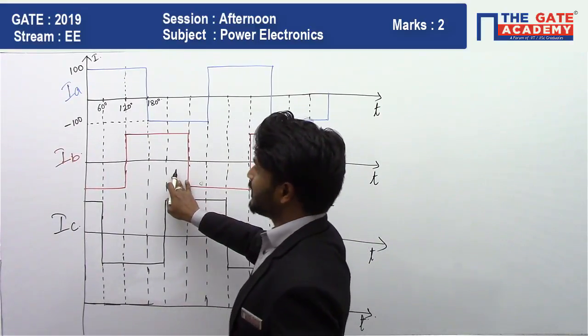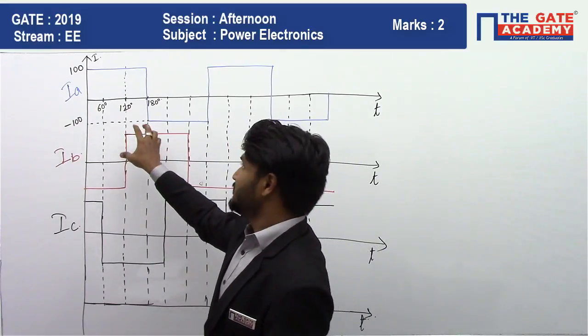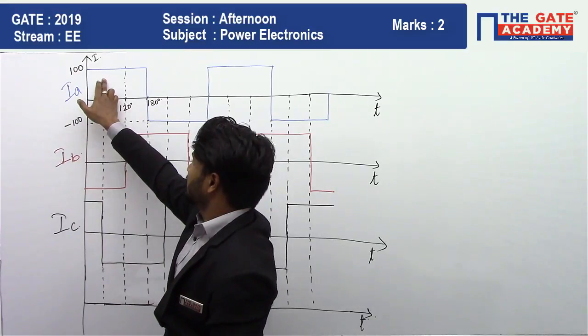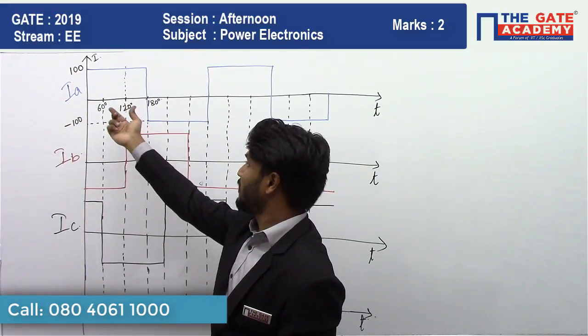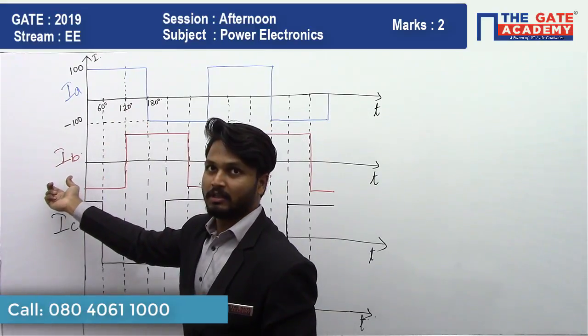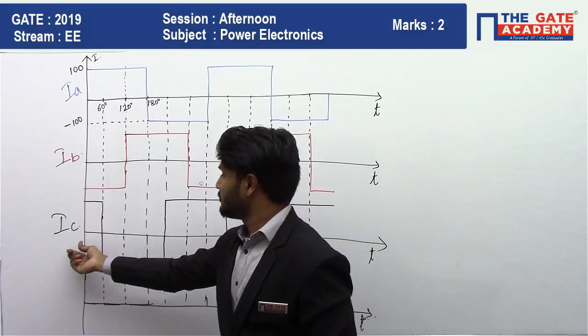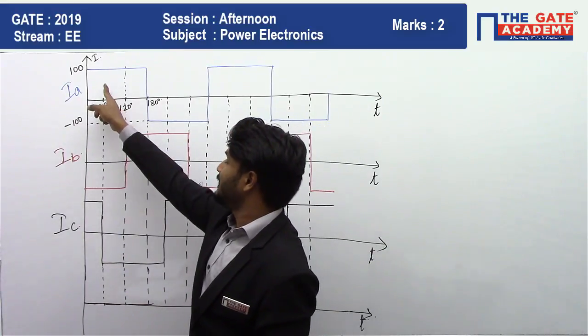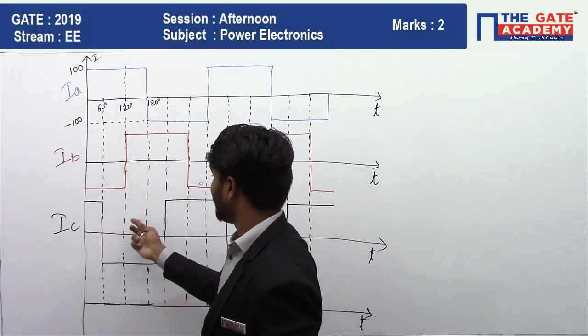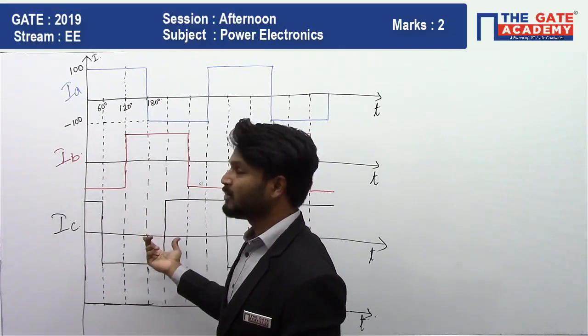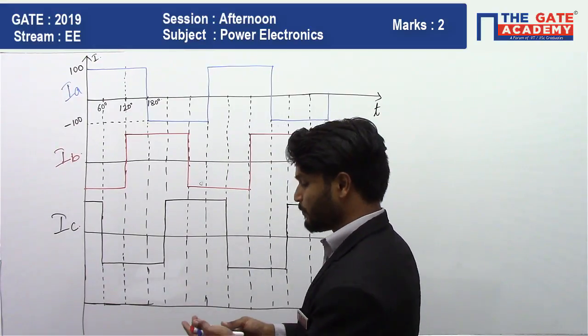So students, if you look at the plot, if you look at the graph, these are the three currents. This is Ia, right? So a 120 degrees phase-shifted version of Ia is nothing but Ib, and a 120 degrees phase-shifted version from Ib is nothing but Ic.